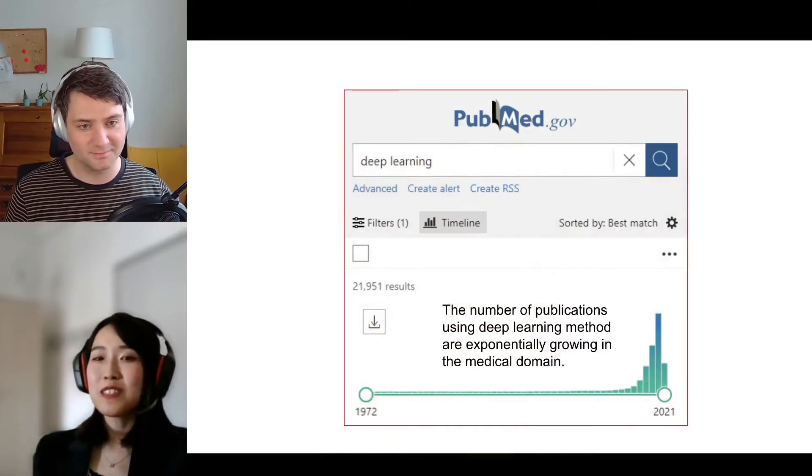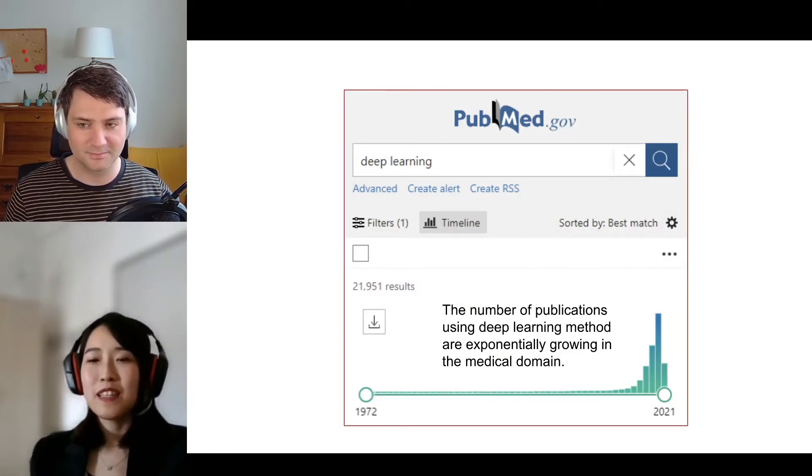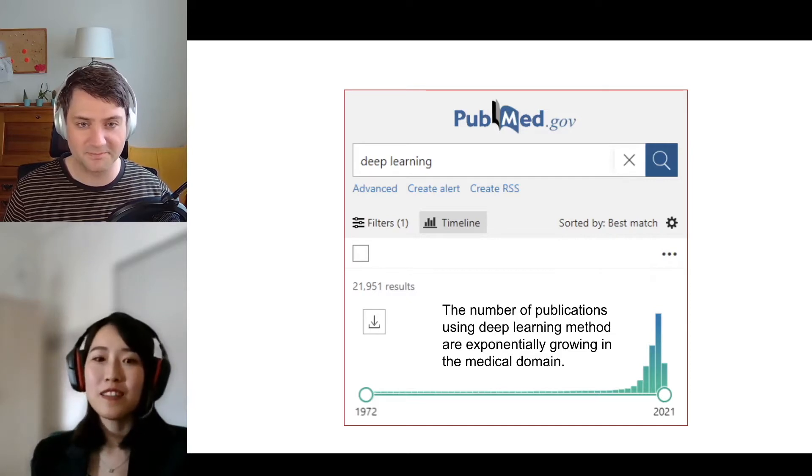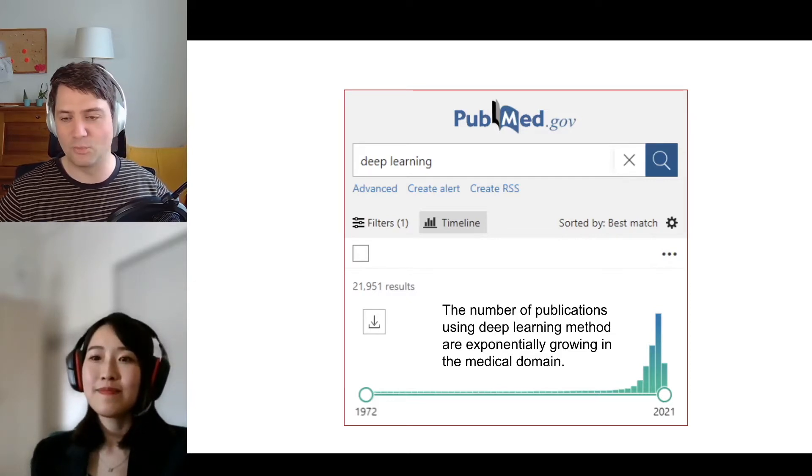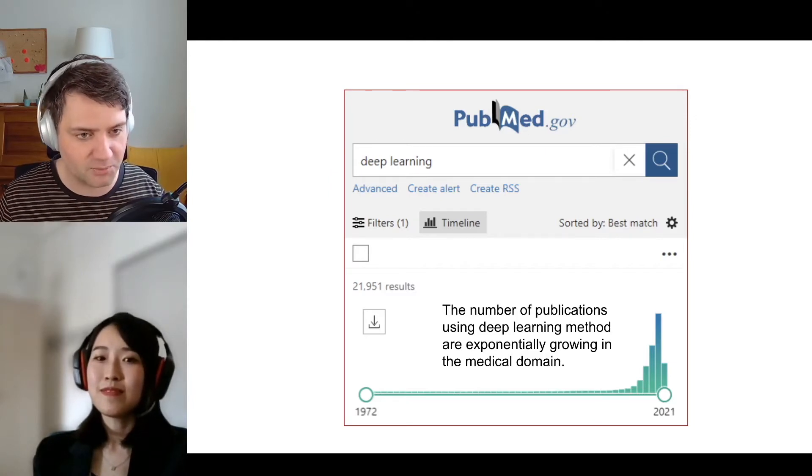But in the research domain, remarkable publication has been made as you see on the figure. Wow, so many papers. It's increasing exponentially. Okay, tell us more about the basic concept of deep learning before we jump into the implementation part.